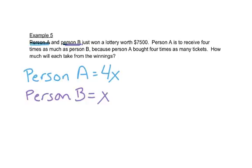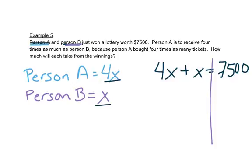Now they're getting together the whole thing, the $7,500. So if you take what person A won, which is 4X, plus what person B won, which is X, then we should get $7,500. Now we need to solve this. We'll draw our line down through here. This is one X really, we'll put these together. 4X plus 1X is 5X.